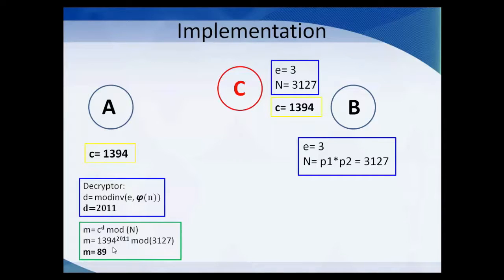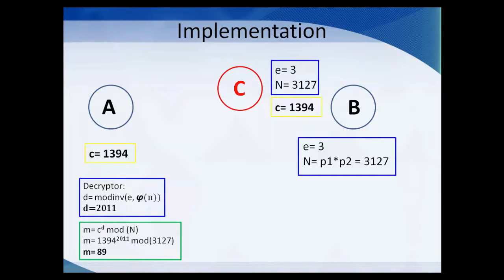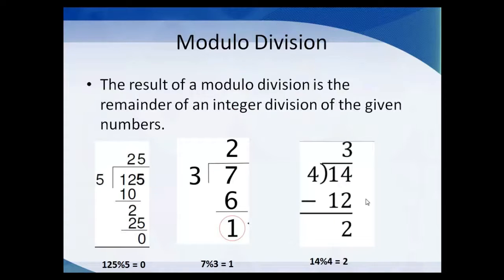Two important things to note: first, the value 1394^2011 is enormously large even with just two-digit numbers — just imagine when digits are 350–400 long. Second, the intruder C has the public key and the encrypted message 1394, but cannot retrieve the message 89, because C cannot find the constituent prime factors of n=3127. When n is very large, it is extremely difficult to factor it into p1 and p2.